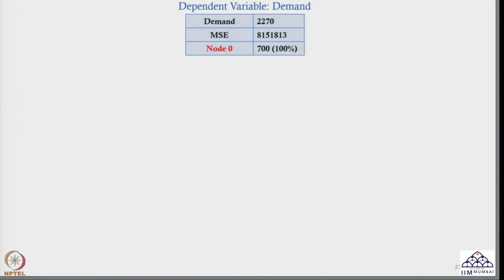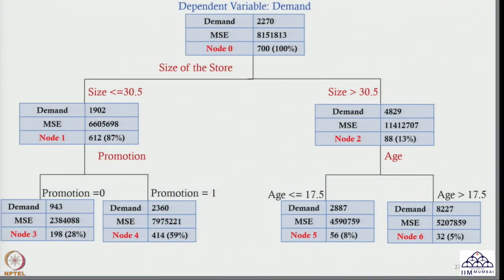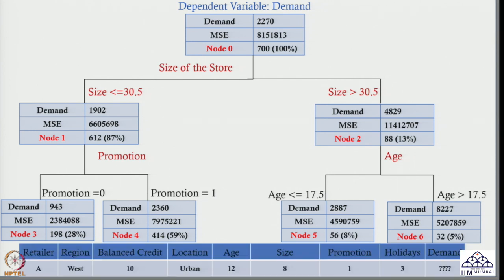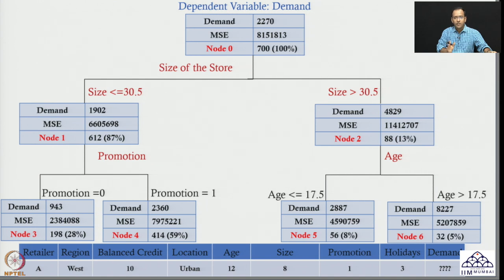In the last lecture — lecture 8 of the Analytics in Supply Chain Management module — we developed a regression tree and tried to predict the demand of retailers located in various regions based on their balance credit, location, age, size, promotion, and holidays. We tried to find out what the demand of these retailers would be, and to do that, we developed this regression tree. I will quickly summarize what this tree is about and how it was built.